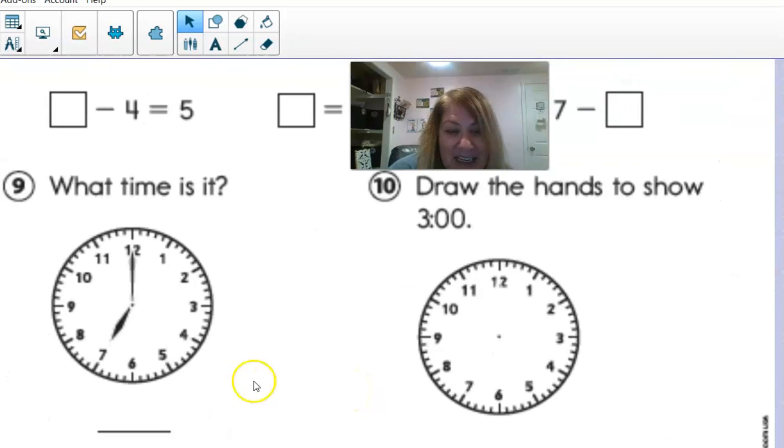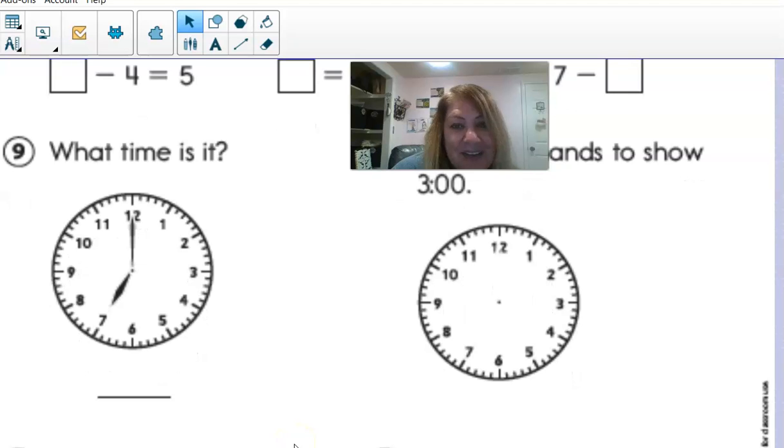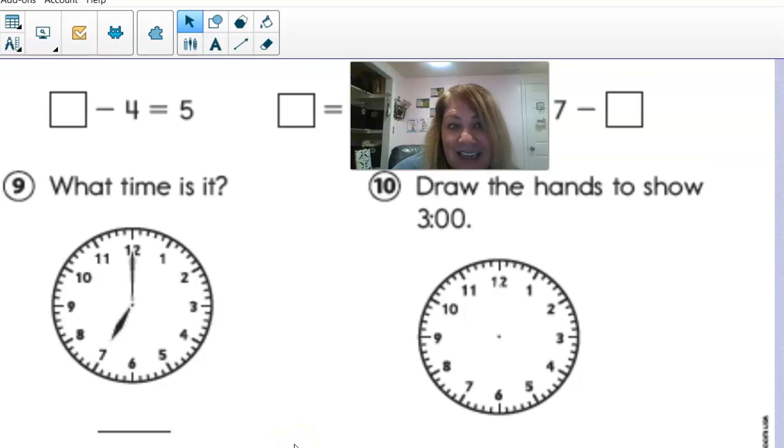Number nine and ten say, what time is it? So here it is on an analog clock and you're going to write the digital time. Number ten has the digital time and you're going to make it on the analog clock. Make sure you remember that the little hand stands for an hour and the big hand stands for the minutes. You can look around the house if you have a clock to help you remember what you're doing.